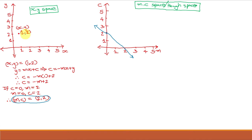Let point (1, 2) be in XY space, so X = 1 and Y = 2. For the Hough space, we write C = −MX + Y, therefore C = −M·1 + 2, so C = −M + 2. If C = 0, then M = 2; if M = 0, then C = 2. So the point (1, 2) in XY space becomes a line passing through M = 2 and C = 2 in the MC space or parameter space. We have thus converted the point (1, 2) of XY space into a line in MC space.